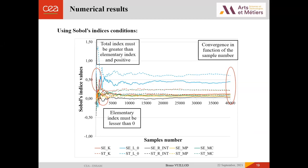So we can see that here. By plotting the Sobol's indices value in function of the sample number, we will observe different things. At the beginning, we can see that the total index must be greater than the elementary index and positive. By regarding the definition, that's impossible. So we can also have elementary index less than zero. By seeing the definition, it's impossible too. So it shows that we have to do a lot of simulations to obtain the convergence of our Sobol's indices. And here we can see that our convergence is obtained after 30,000 simulations.